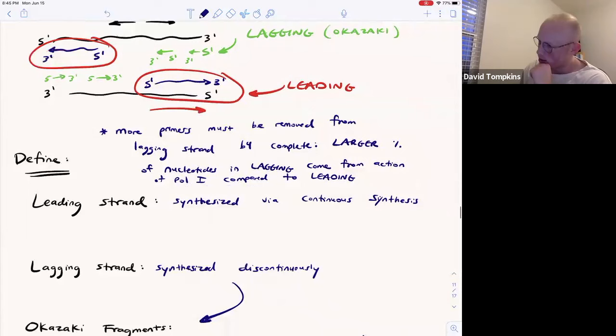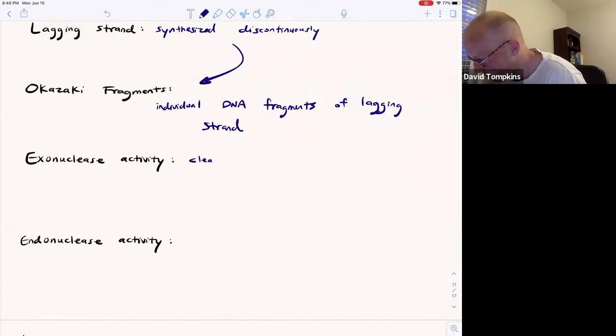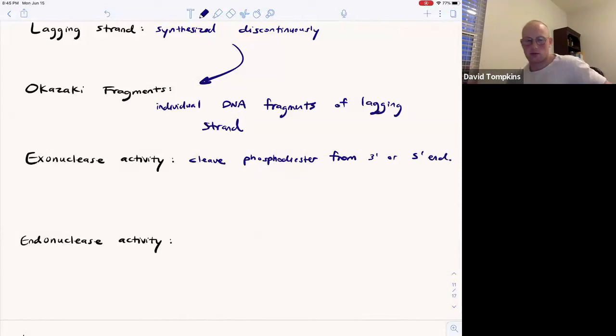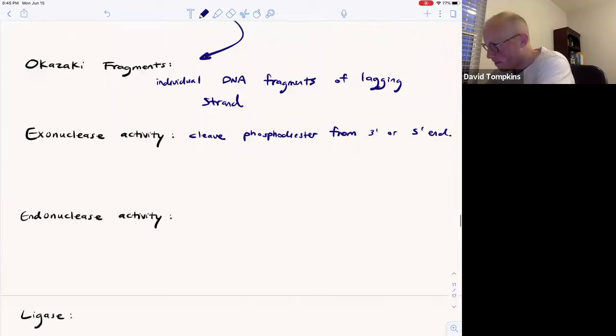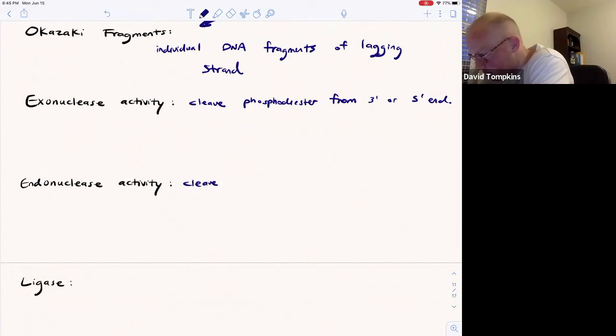So exonuclease activity means it's able to cleave DNA or cleave phosphodiester bonds by starting, or having the origin of catalysis at either the 3 prime or the 5 prime end. And you'll see the directionality in the nomenclature where it's said to be a 3 to 5 prime exonuclease or a 5 to 3. Endonuclease, these are also going to cleave phosphodiester bonds and degrade the double-stranded DNA or degrade the RNA primer. They do so from somewhere not at the beginning and not at the end of the DNA sequence, so from somewhere in the middle.